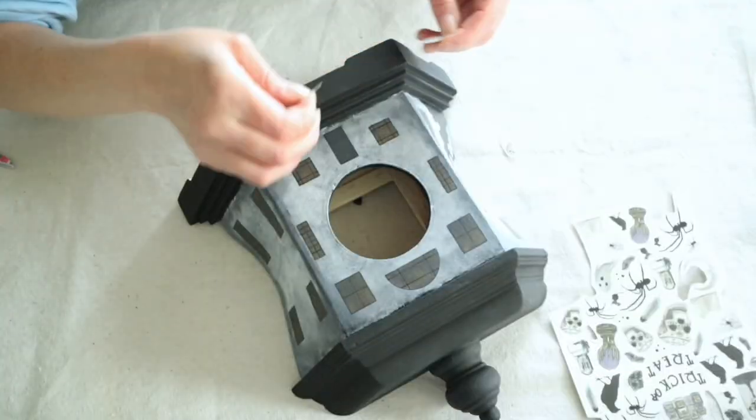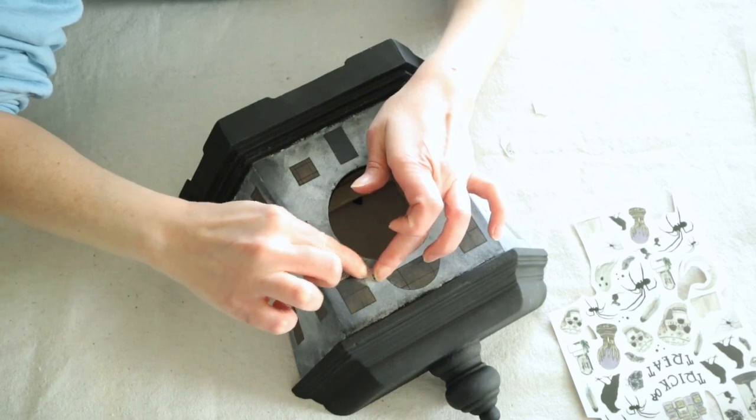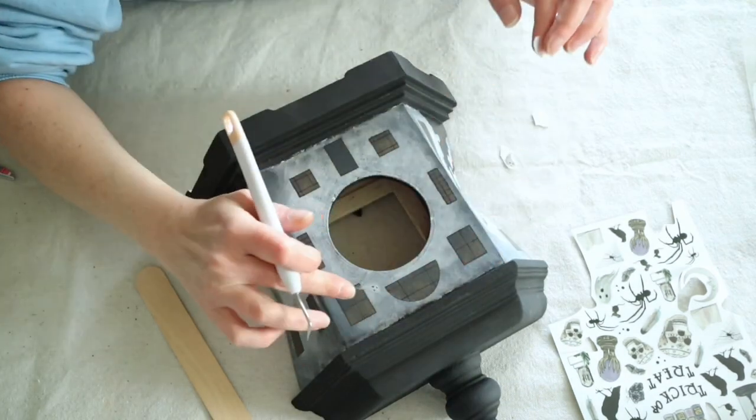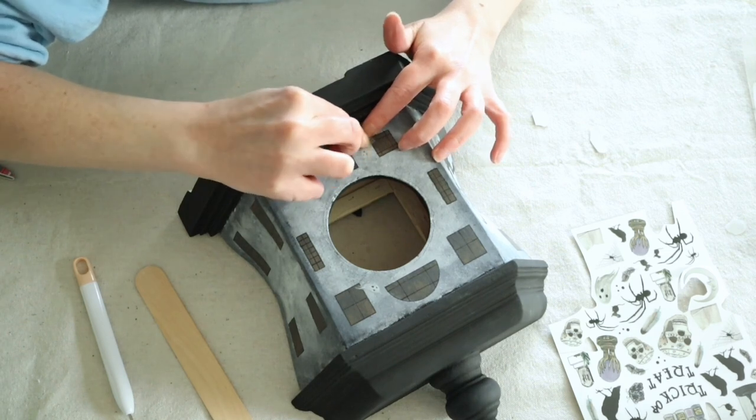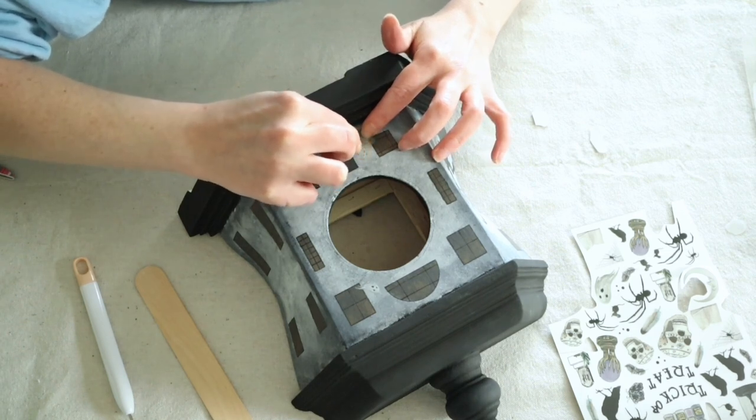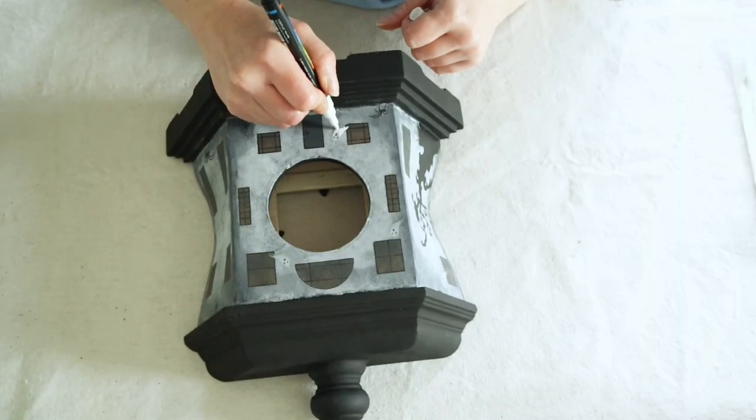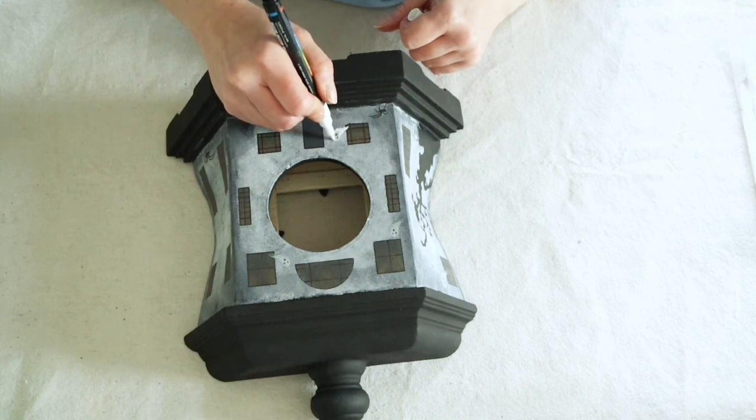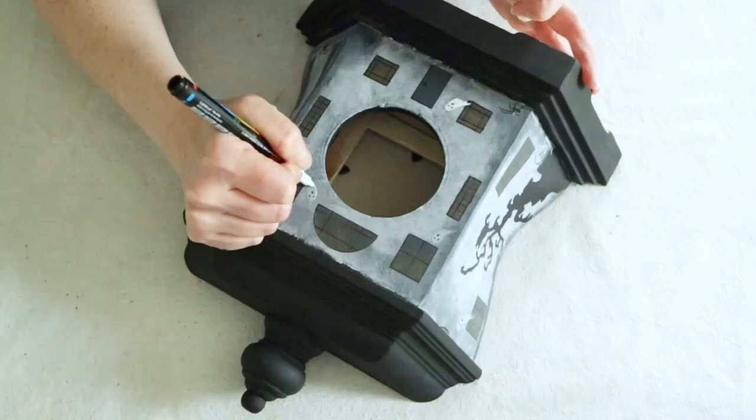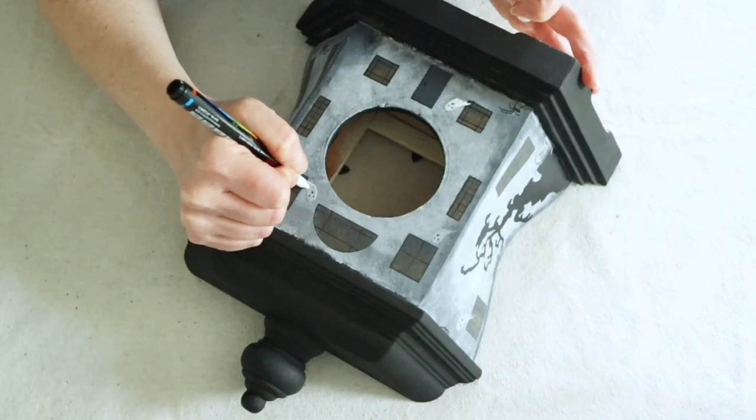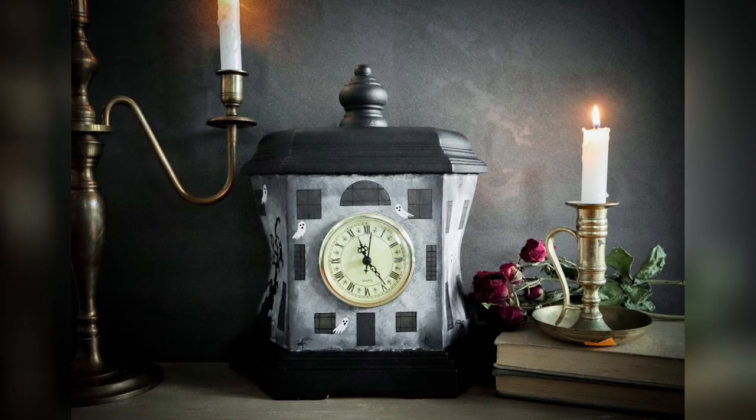Then it was time to really spook up this haunted house, so I grabbed some rub-on transfers that I got from Dollar Tree last year. I just started randomly placing some ghosts and some spiders, and I even added a little grave on one side of this. But I did notice my ghost transfers were looking a little washed out on this color, so I did go in with one of my paint pens and just used the rub-on transfer and colored those in. That's going to be it for today's spooky Halloween video.